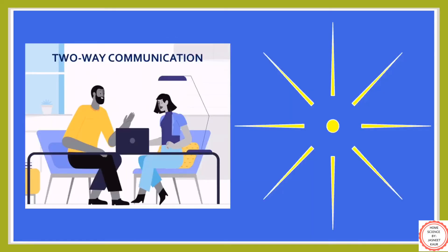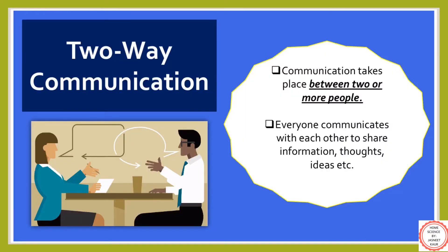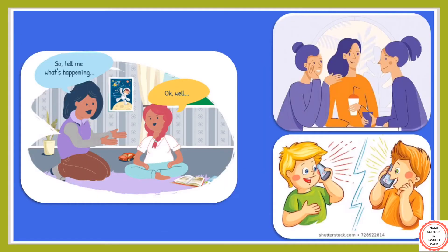The next one is two-way communication. This type of communication is between two or more people. Two-way communication allows people to interact with each other, share their thoughts, ideas, information, knowledge, etc. Examples include friends interacting with each other, communication on phone, and interaction between an interviewer and interviewee.